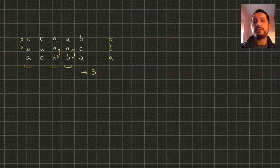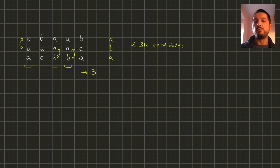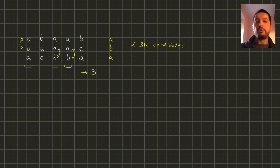Since each final tower is obtained from input towers possibly by swapping, that means we have at most 3N candidates — because we have N towers in the input and for each of them we have three possibilities: no swaps, bottom swap, or top swap. With the same argument we show that for each candidate we need to make 3N tests, because for every tower in the input we check if this tower or one of its swaps is equal to the candidate.